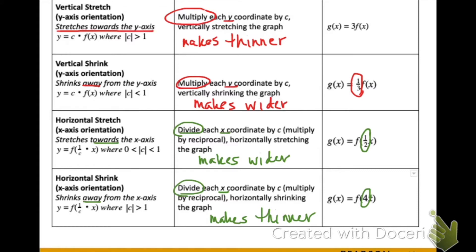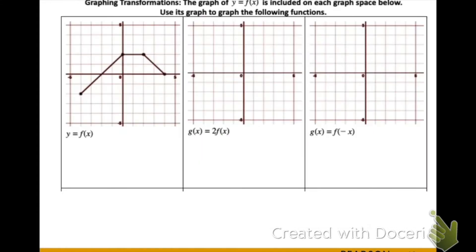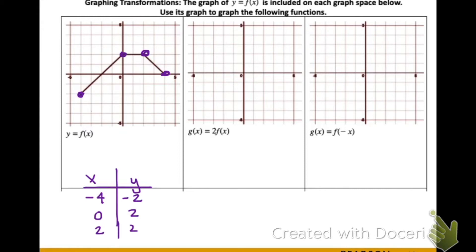What we want to talk about next is how to put these all together. In our first example, let's look at our original function. Notice this is a function because it does pass our vertical line test. I'm going to highlight some points and write their coordinates: negative four negative two, zero two, two two, and four zero.